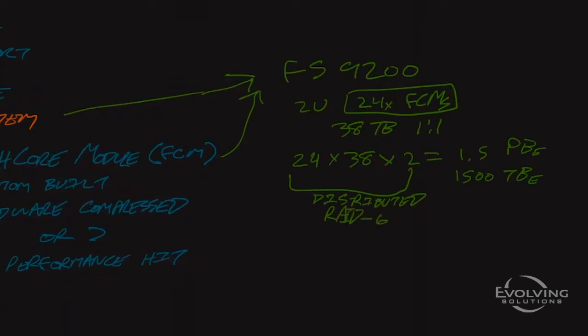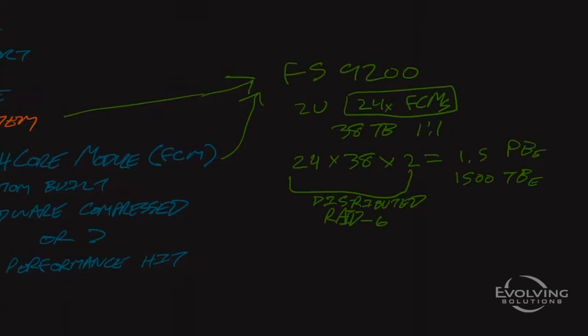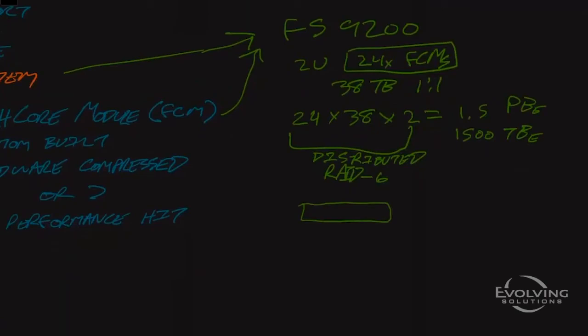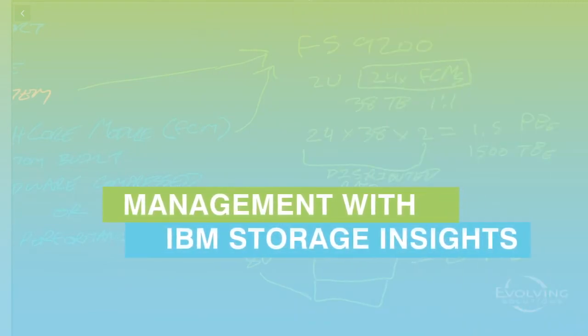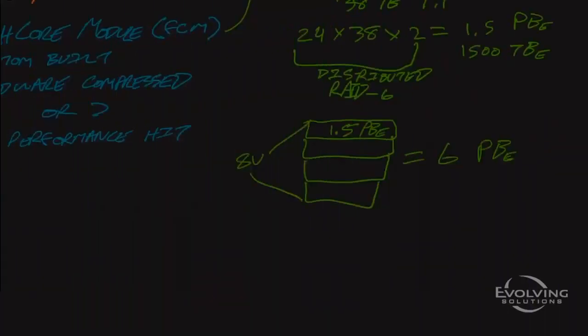All of that is protected with a distributed RAID 6, meaning two drives can fail within a given array, and you won't notice an impact to your operations or your data. Now, what else you can do with inside that packaging is you can cluster four of these together. So you can start with your initial 1.5 petabytes effective in 2U. You can cluster together three more, and what that means is in 8U of Rackspace, things that used to take entire buildings to store not that long ago, equals six petabytes of effective capacity.